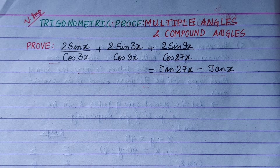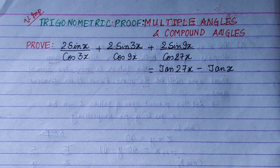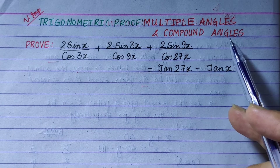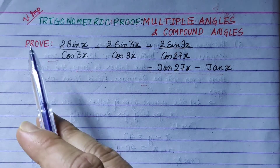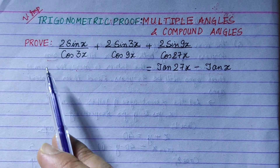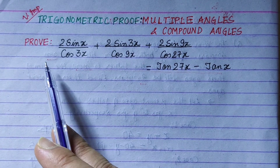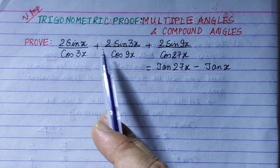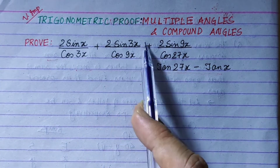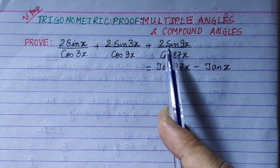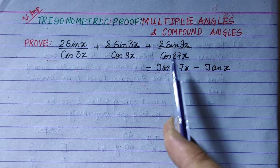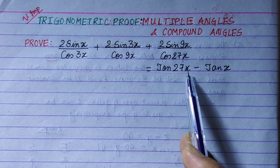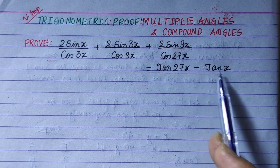Hi everyone. As we have made trigonometric proofs with multiple angles and compound angles, we have an important question. In the question, prove: 2sinx upon cos3x plus 2sin3x upon cos9x plus 2sin9x upon cos27x is equal to tan27x minus tanx.